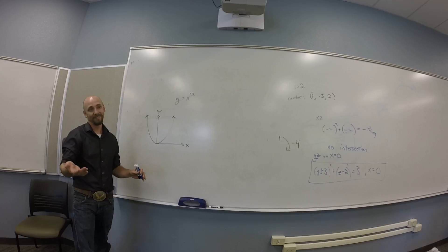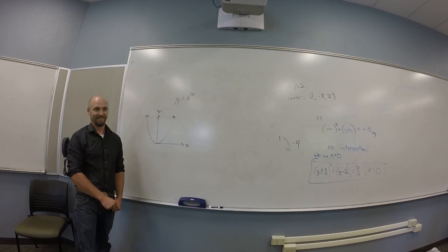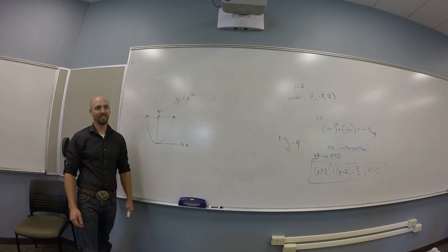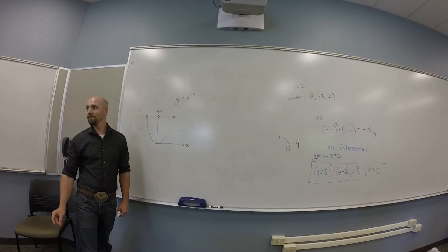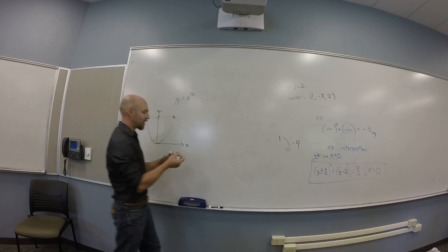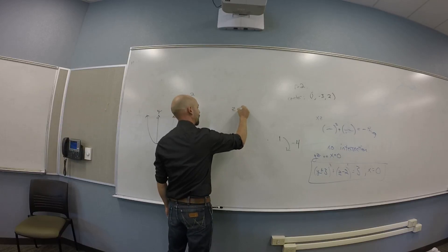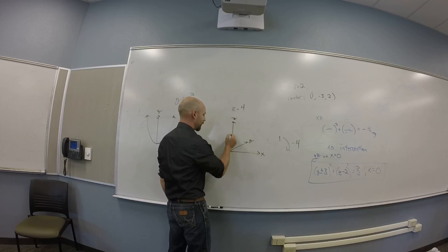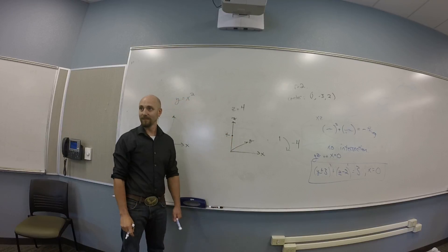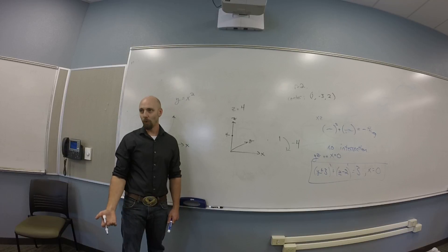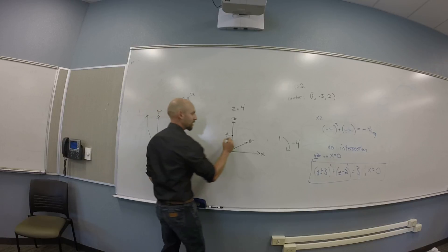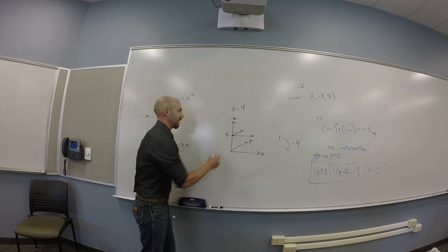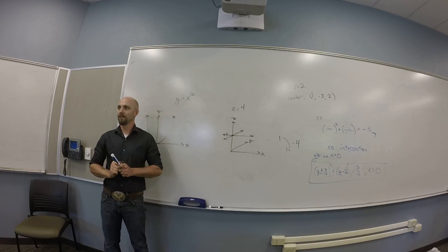You can sweep out whatever you want — a sinusoidal cylinder would be y equals sine x or z equals sine y. What about z equals 4? That doesn't specify x or y, so it sweeps through all x's and y's at height 4 — you get a plane.